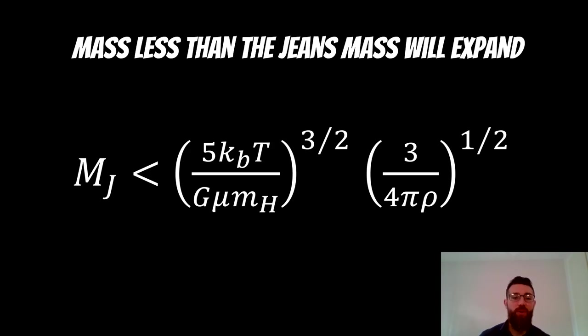Now if it's equal, so the cloud is equal to the Jeans mass, then the two are going to balance one another, and it will remain fairly stable.